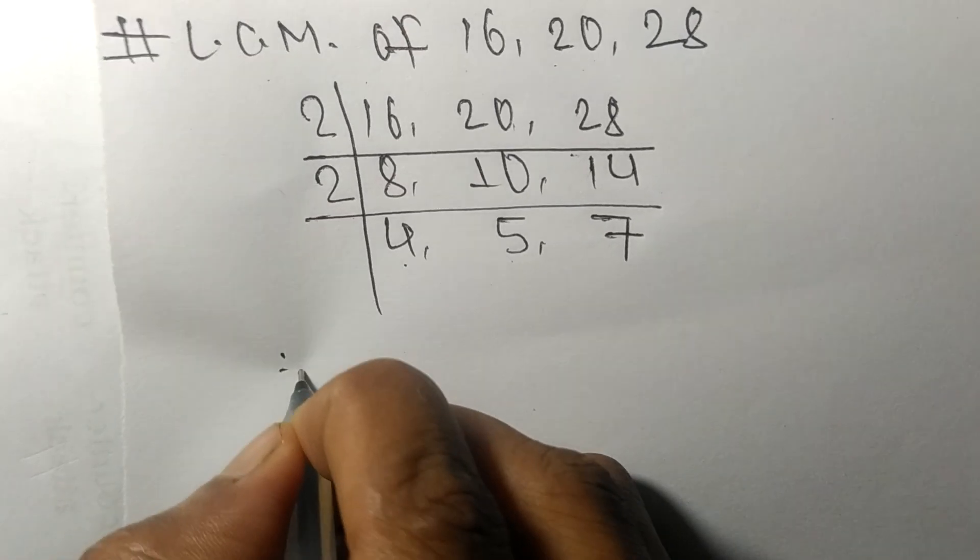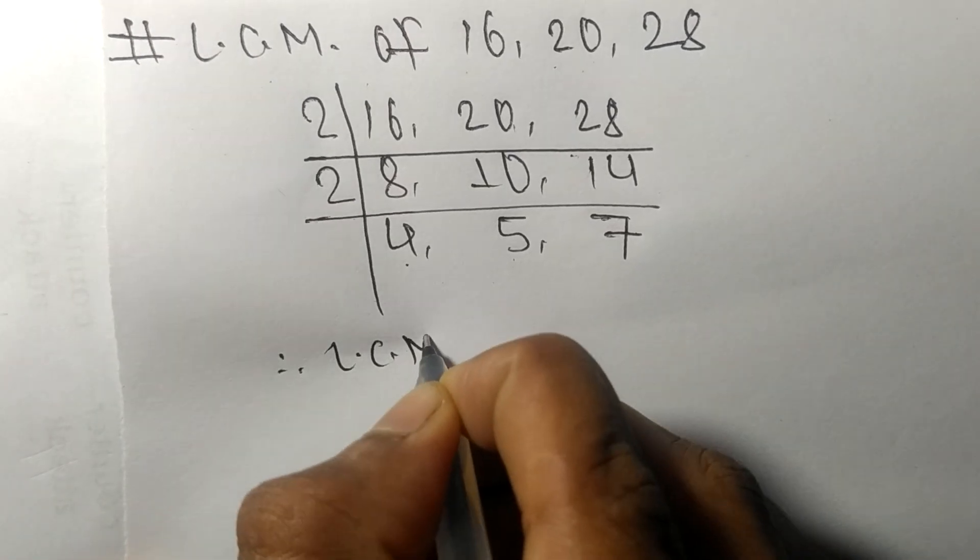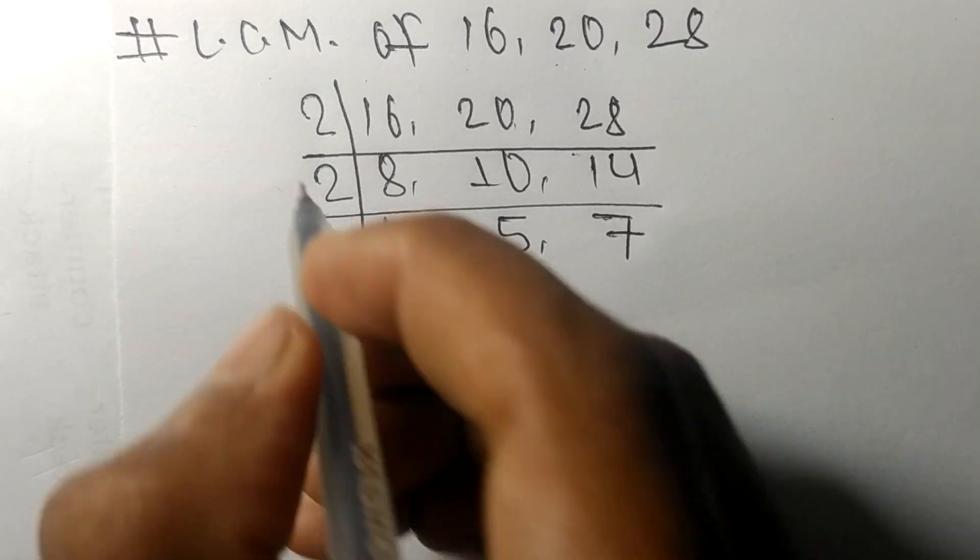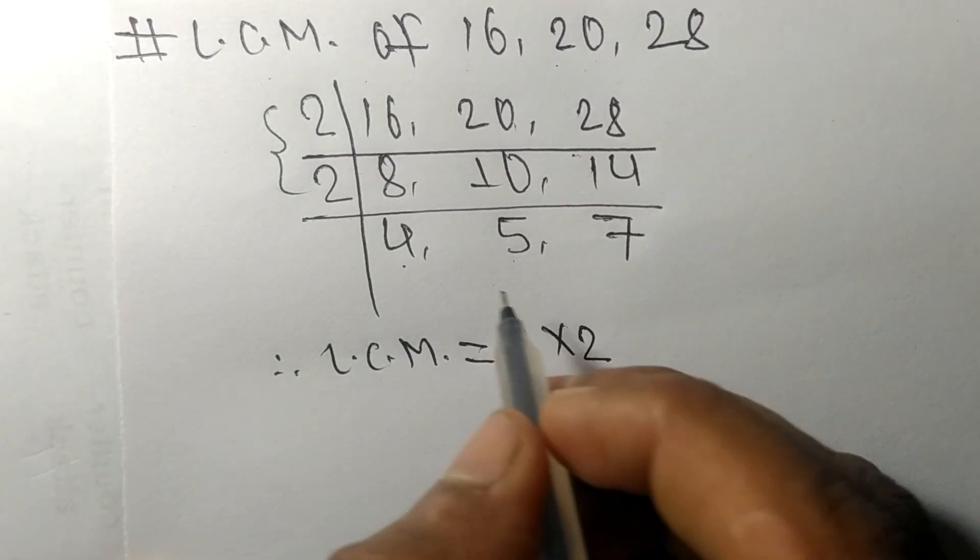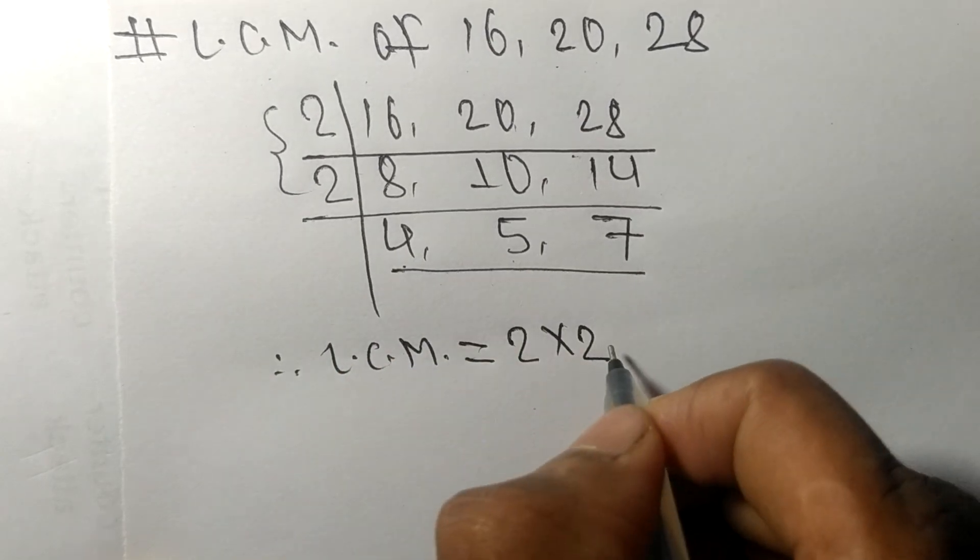Therefore its LCM is equal to, from this side it is 2 times 2, from this side it is 4 times 5 times 7.